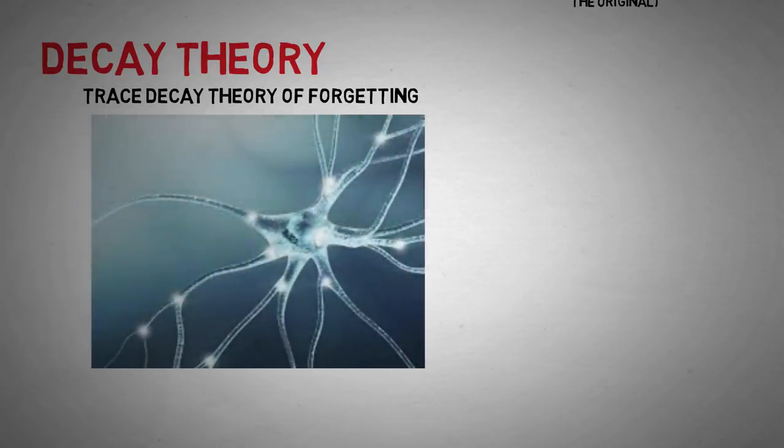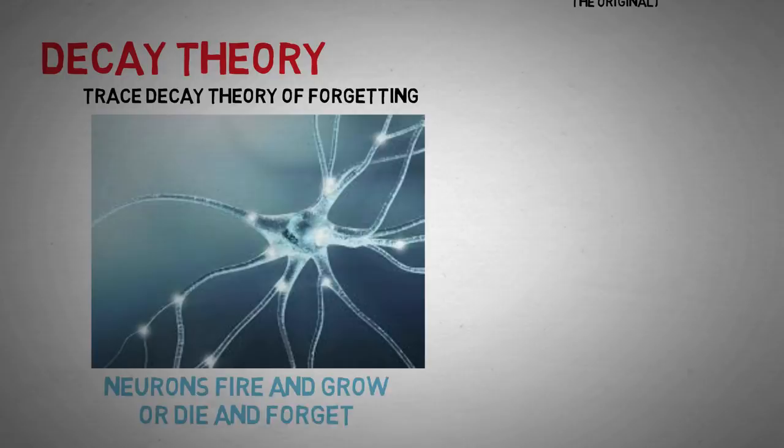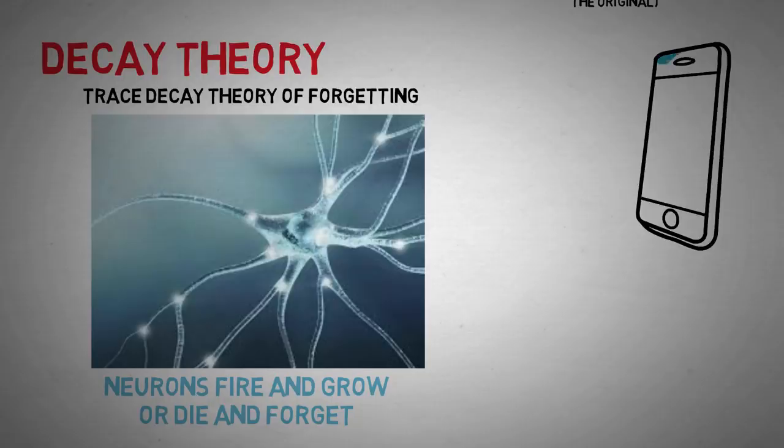When the memory is initially created, it leaves a trace of chemical changes in our brain. And as time passes, that trace fades away. On one hand, this theory is perfectly sensible. We're more likely to remember a phone number told to us two minutes ago than a phone number that was told to us two weeks ago. We're likely to remember what we ate yesterday, but less likely to recall what we ate on a specific date four years ago.